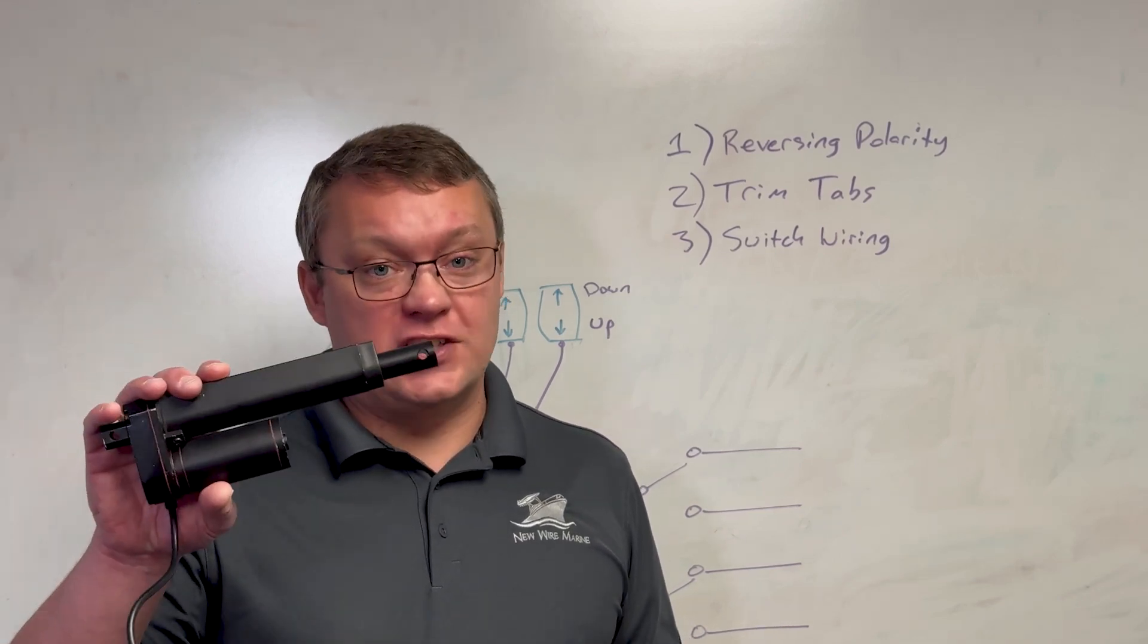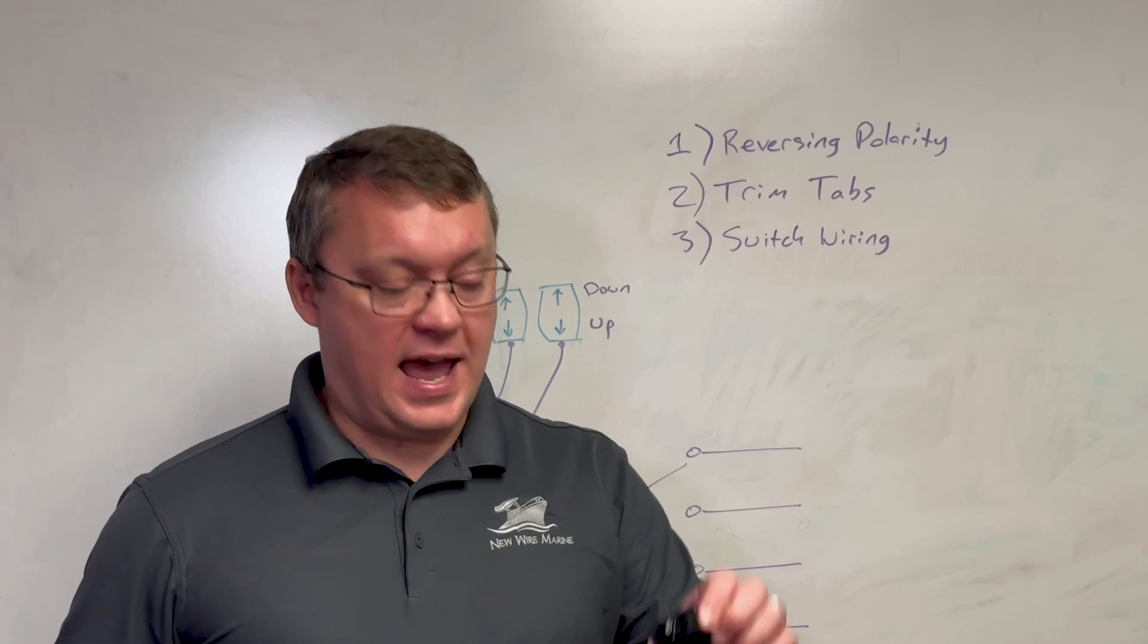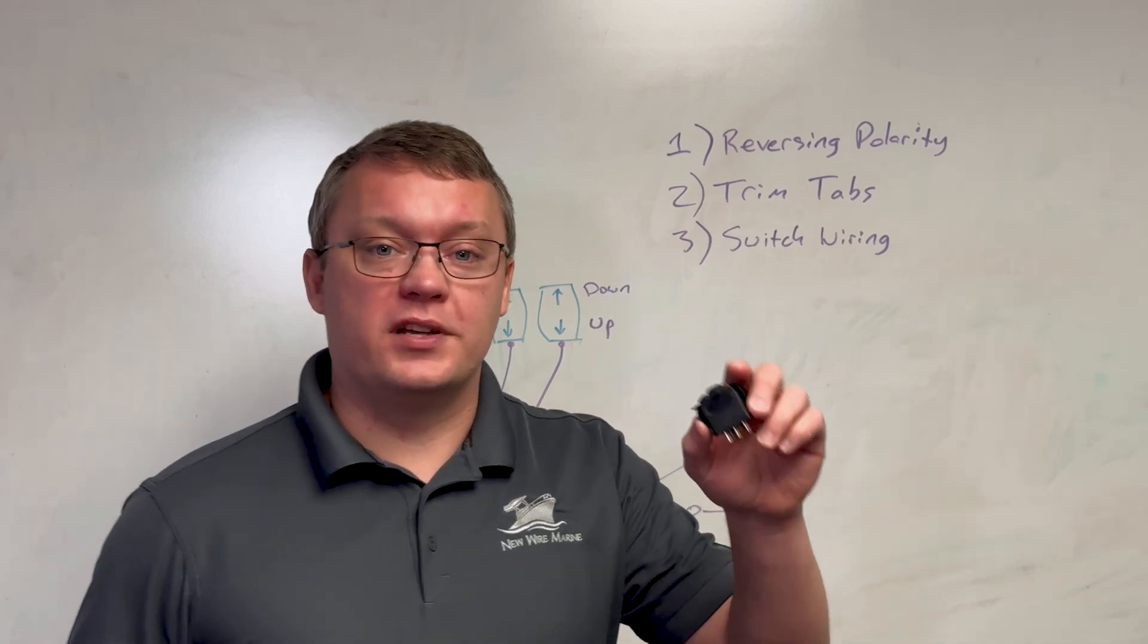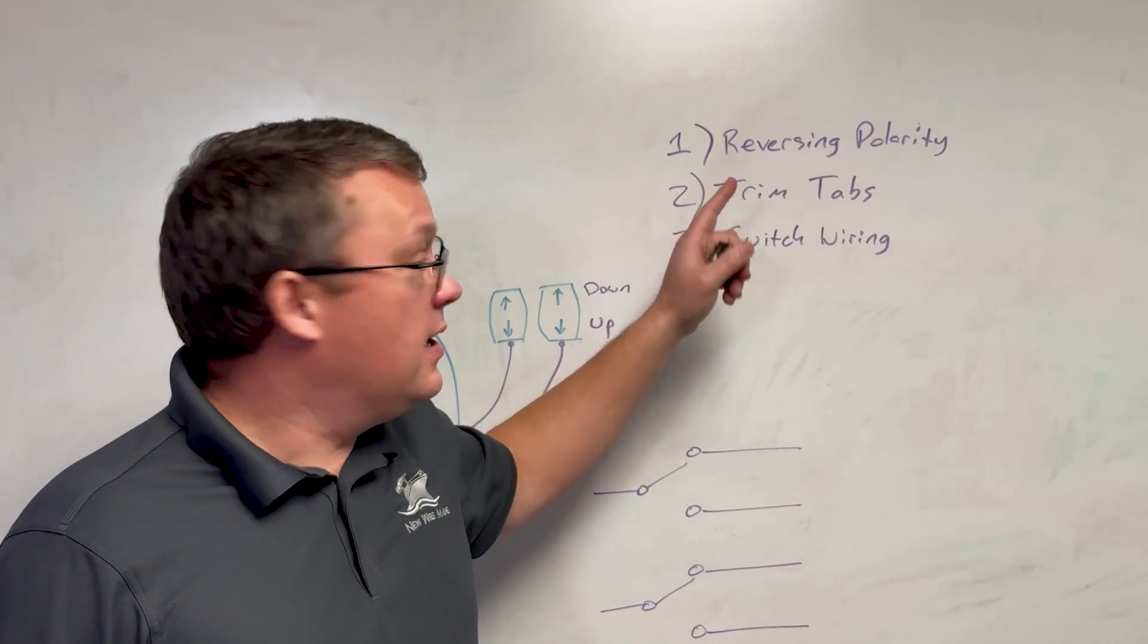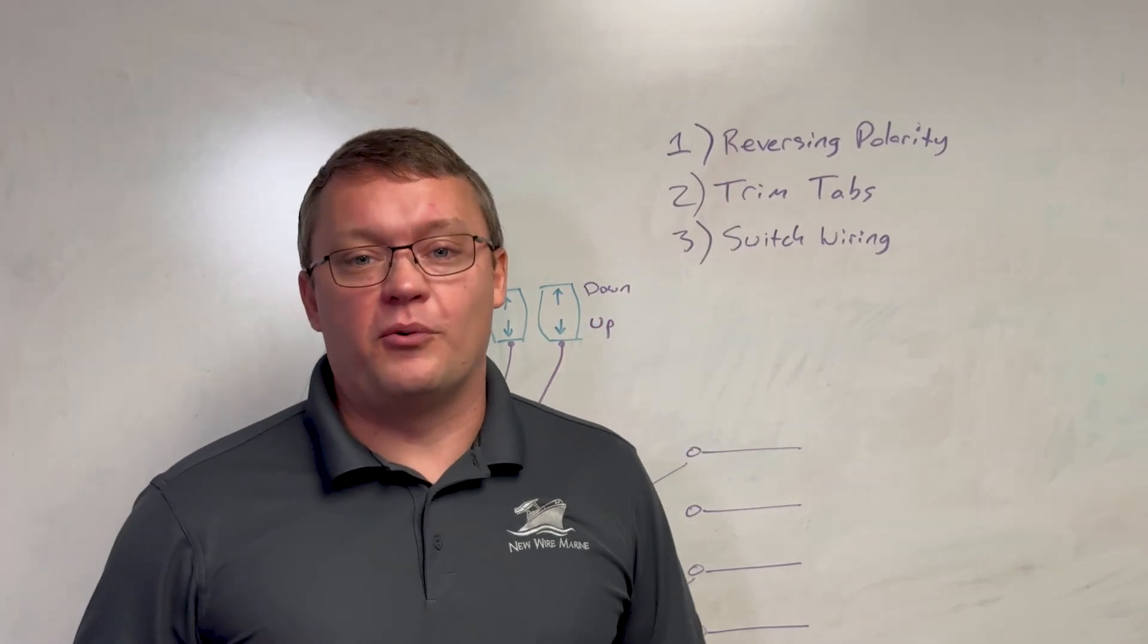This uses a linear actuator with reversing polarity and a double pole, double throw rocker switch. We'll talk about what reversing polarity is, how it applies to trim tabs, and details about how to wire that switch.